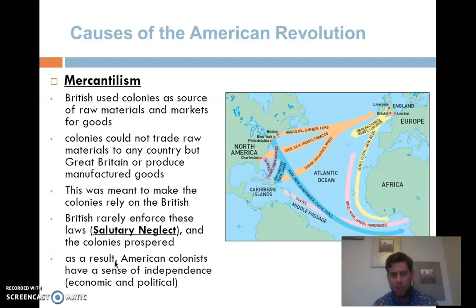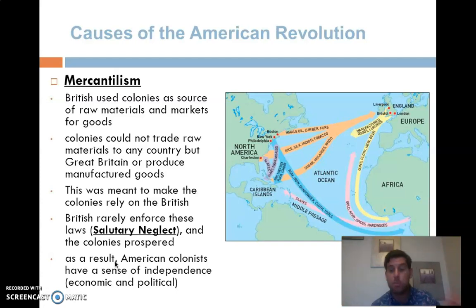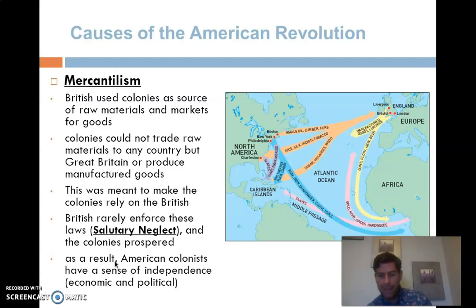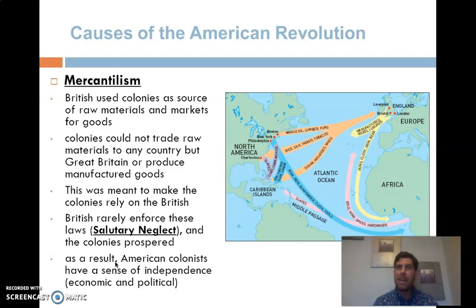A lot of colonists, especially after 1763, began to say to themselves: this process isn't fair. Why aren't we getting as rich as our counterparts back in England? They began to see themselves as sort of second-class citizens — which, according to English law, they were not. English colonists, just like their counterparts back in England, were guaranteed the same rights and protections under ancient institutions like the Magna Carta. So colonists began to ask themselves, especially after 1763: why aren't we being treated the same as our cousins in England?